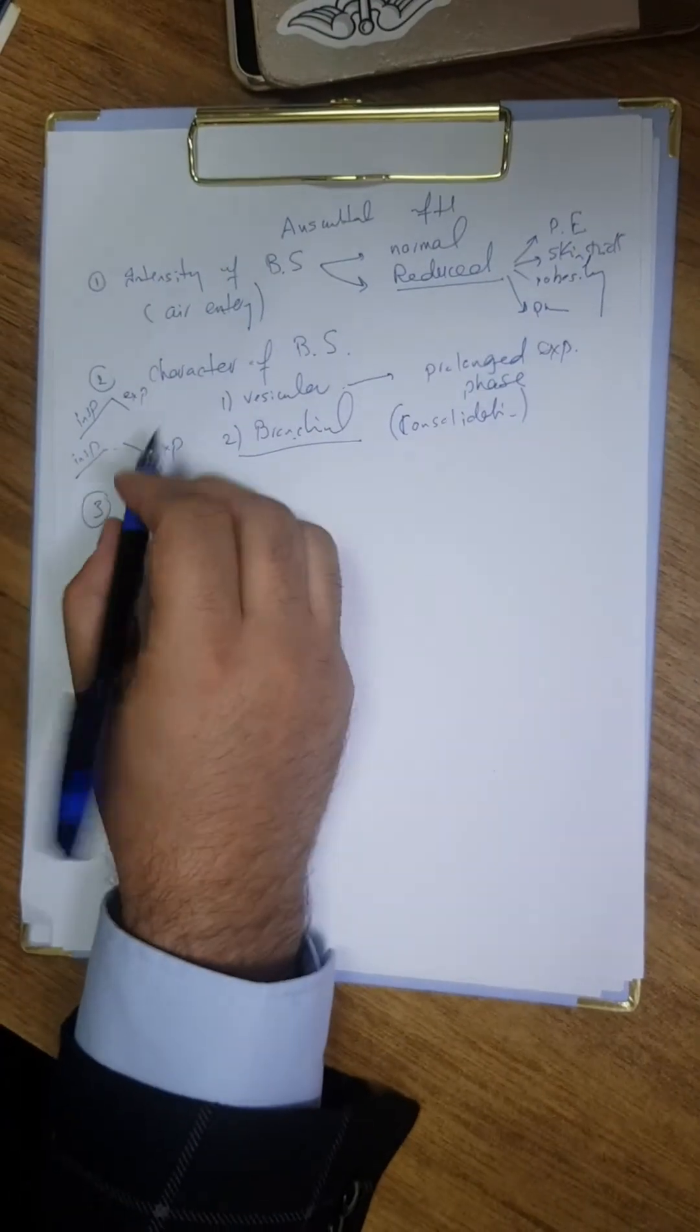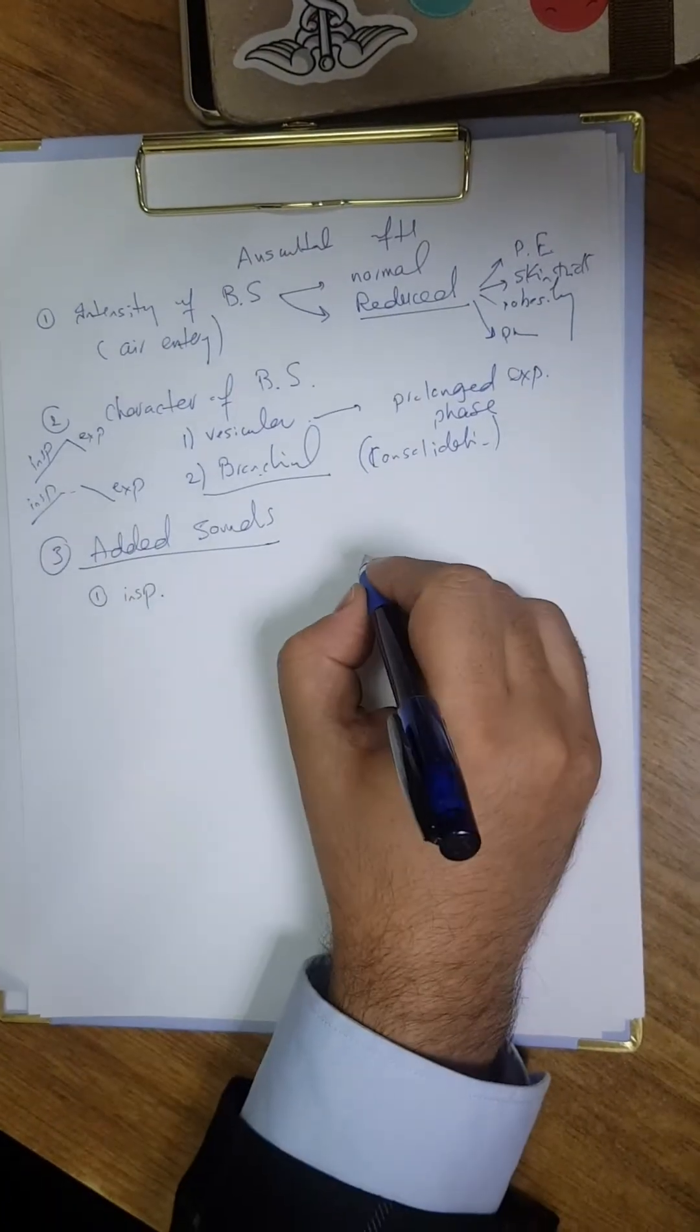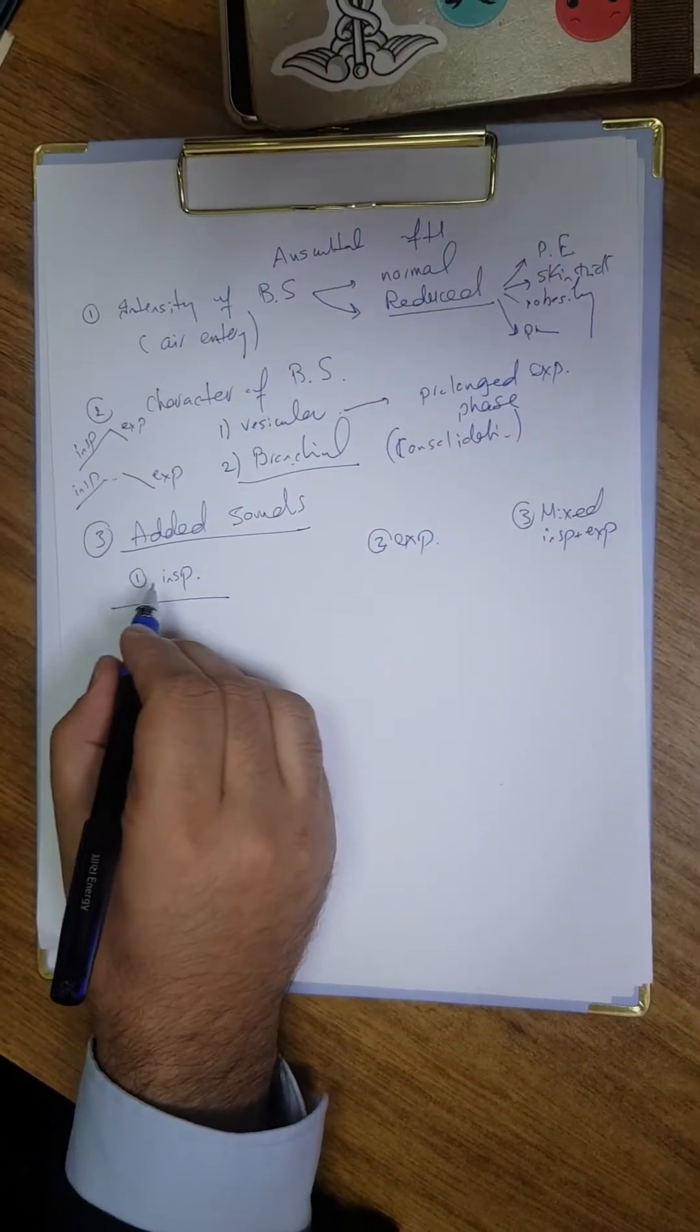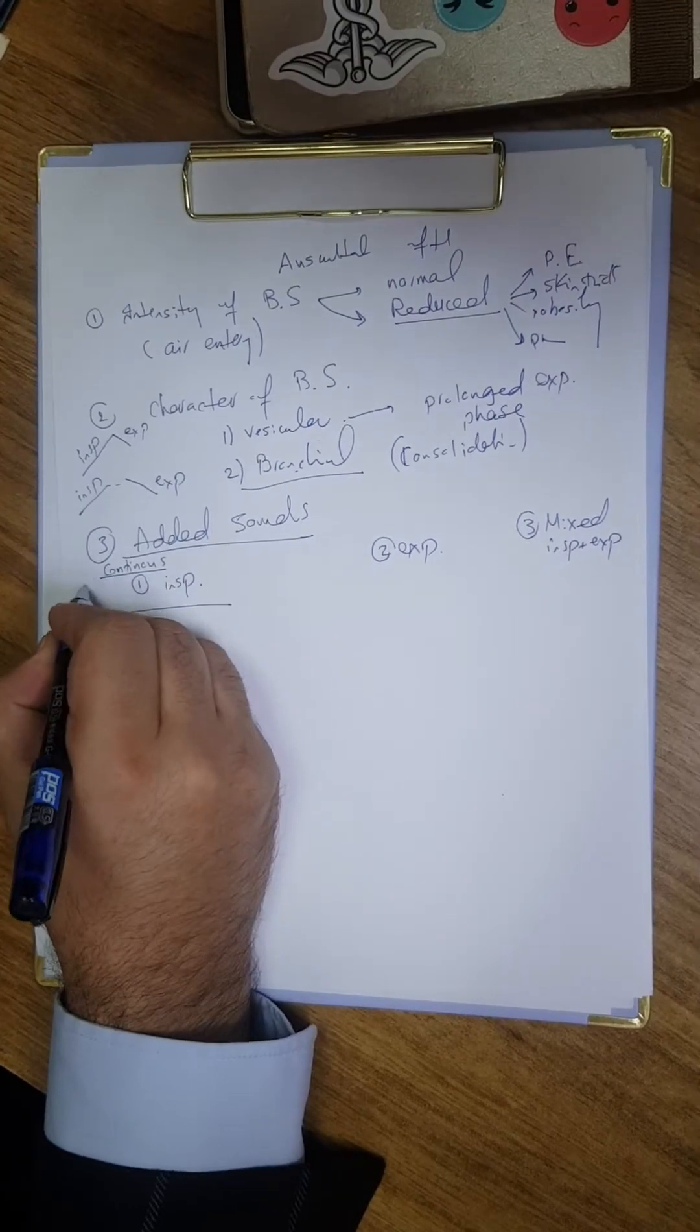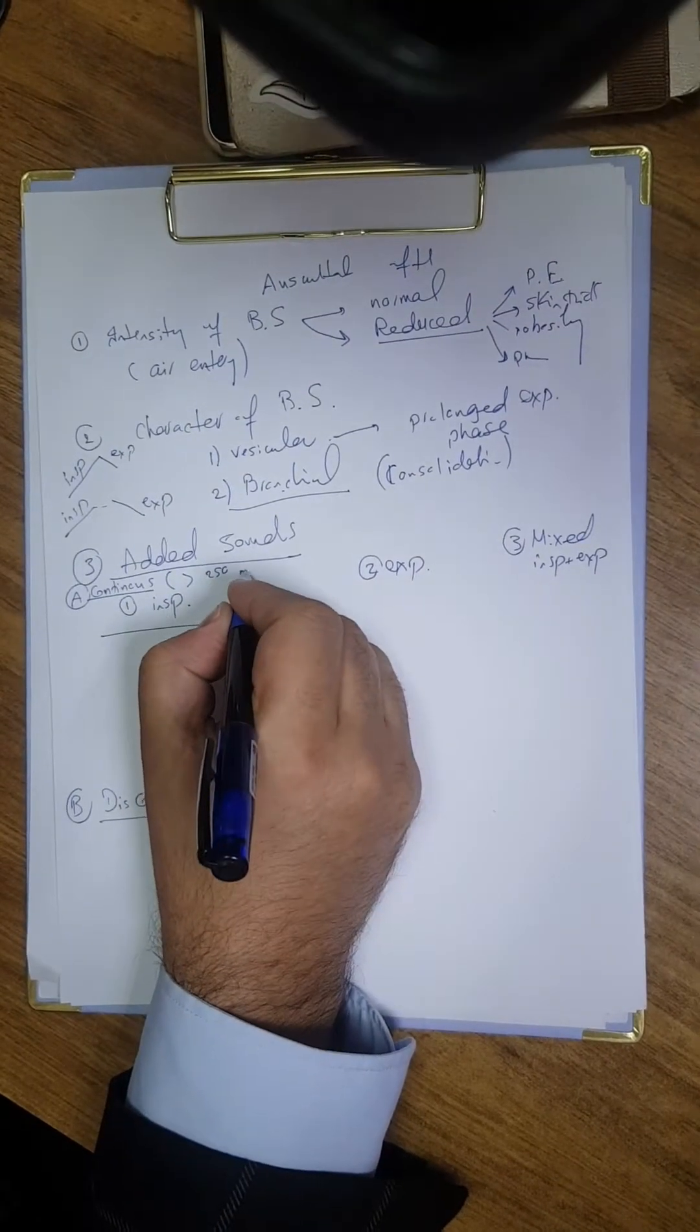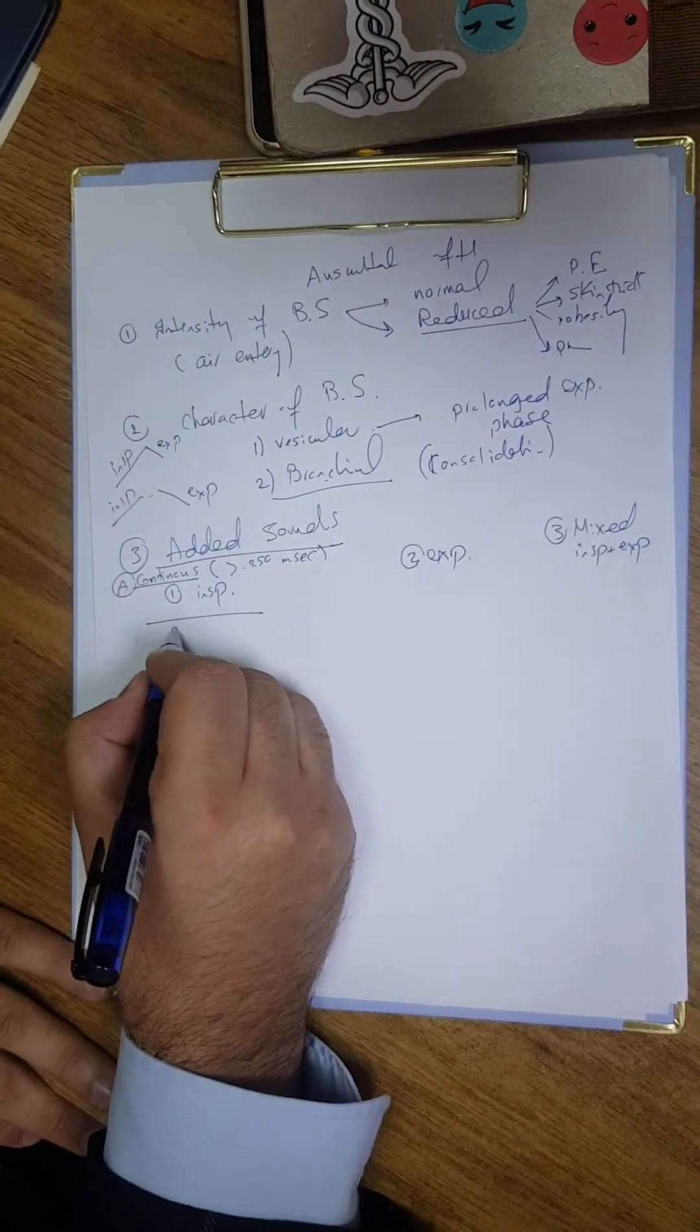The third option is the added sounds. Added sounds we divide into two parts: either inspiratory or expiratory or mixed, inspiratory plus expiratory. In the inspiratory added sounds, we have continuous and discontinuous. The continuous sounds are more than 250 milliseconds. Pan-inspiratory only indicates stridor.